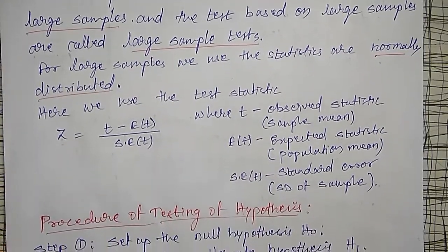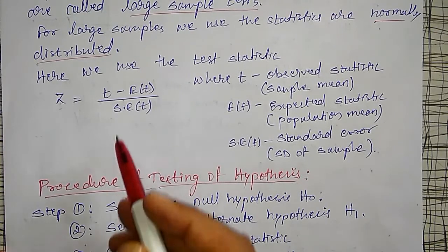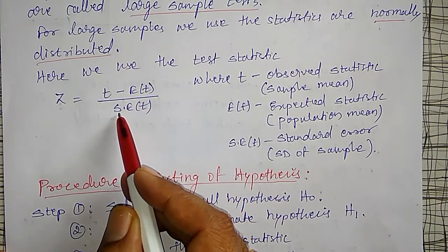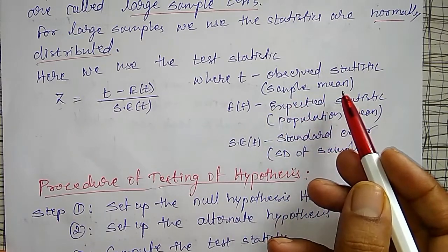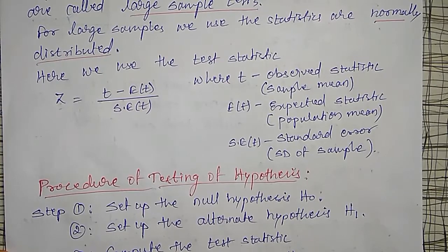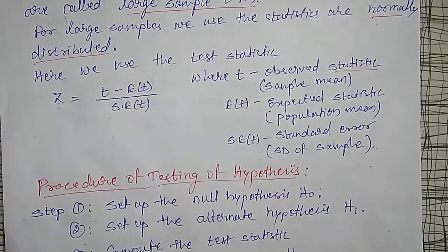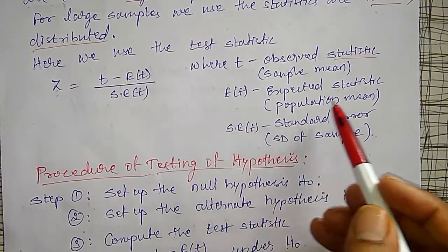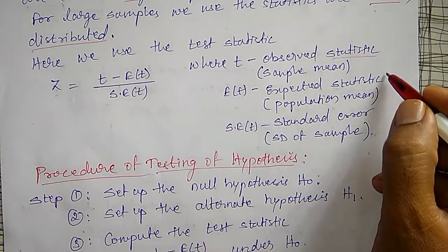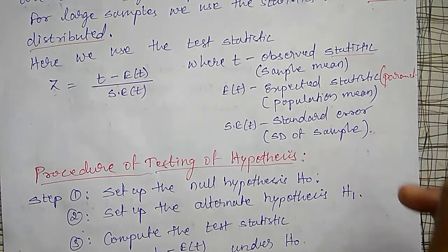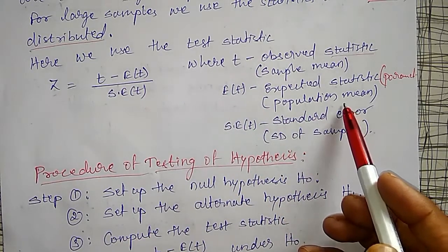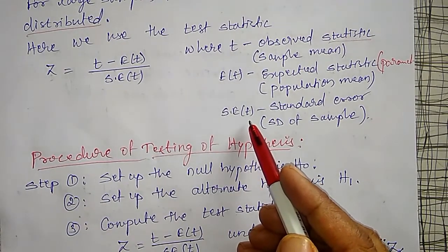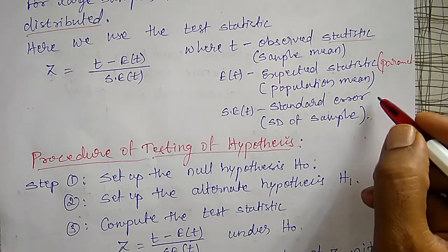Using the normal distribution, the test statistic Z is given by: Z = (T − E(T)) / SE(T), where T is the observed statistic — it may be a sample mean or any sample statistic. E(T) is the expected parameter related to the population, such as the population mean, and SE(T) is the standard error of the statistic.